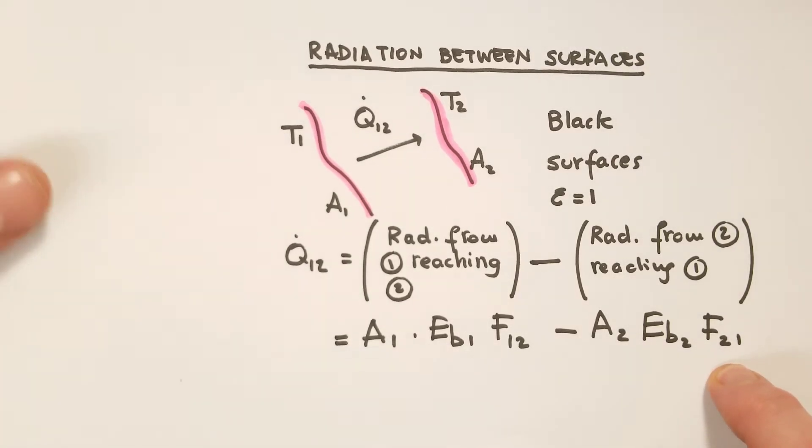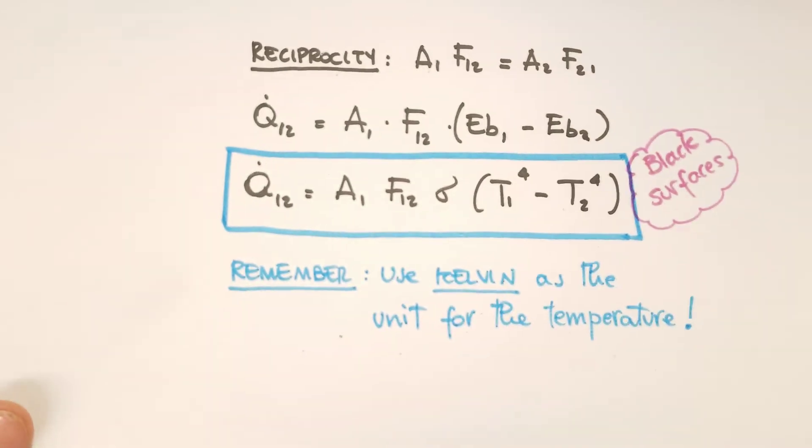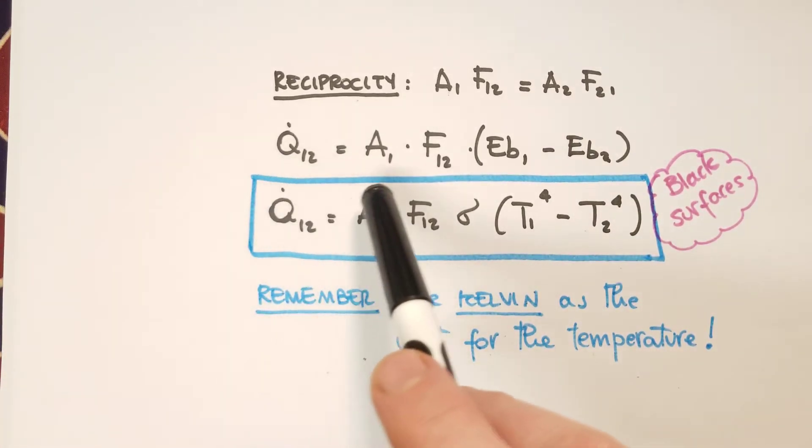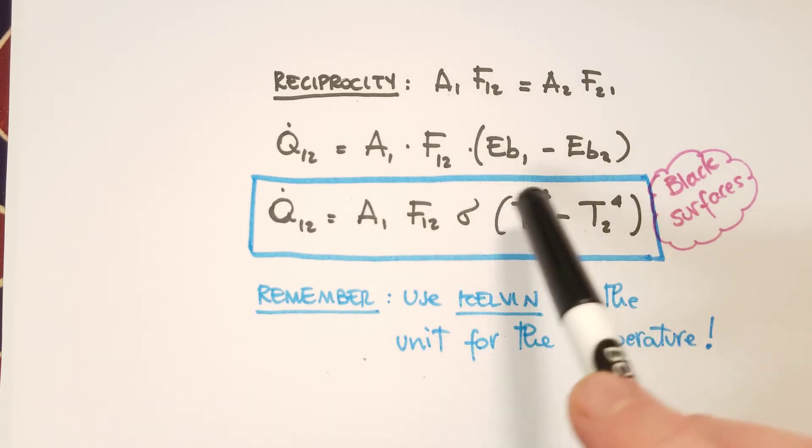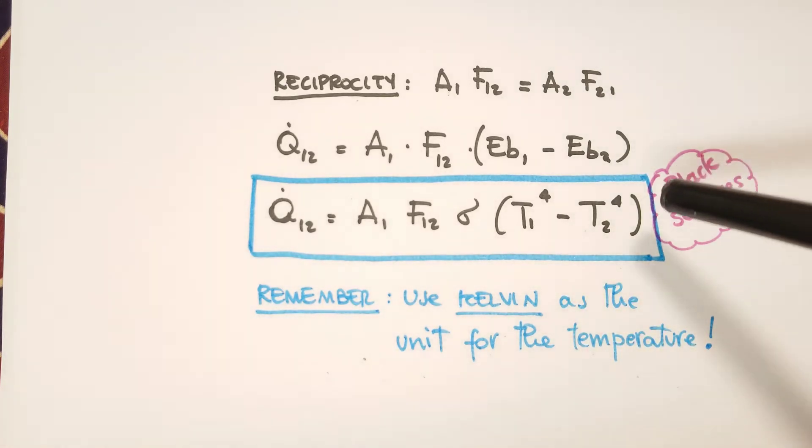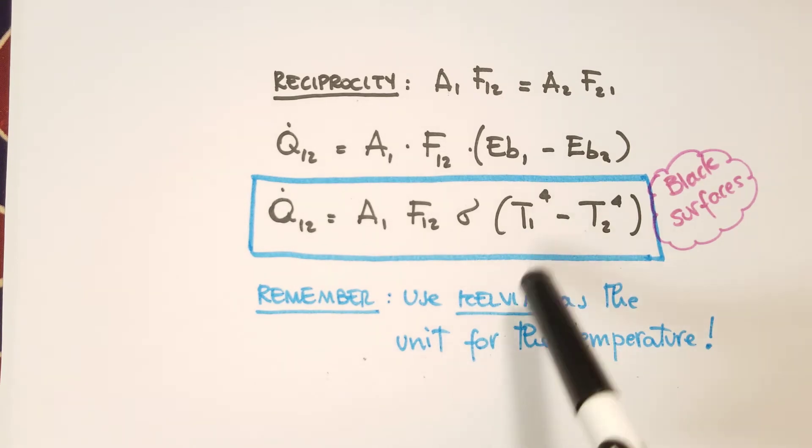So all we have to do now is use the reciprocity rule. If you remember, the reciprocity rule is A1·F12 equal to A2·F21. So the expression Q12 simplifies because we can use this relationship, and we can just have here in parenthesis the difference between the two spectral powers. And since we have black surfaces, then EB1, EB2 can be written as σT1⁴ minus σT2⁴. And we have to remember here to use Kelvin as units for the temperature.